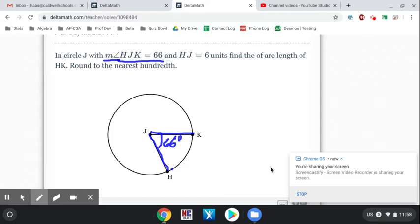Also, HJ is 6 units, so you put a 6 there. So we have 66 degrees between those two, with 6 units. To solve this, what I need to do